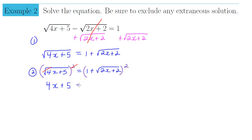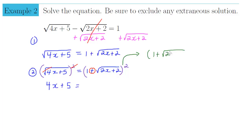On the right side of the equation, we have a bit more work to do. We have a binomial — a two-term polynomial — being squared. In order to square a binomial you have to FOIL. So we have a sub-problem where we FOIL (1 + √(2x+2)) times itself.